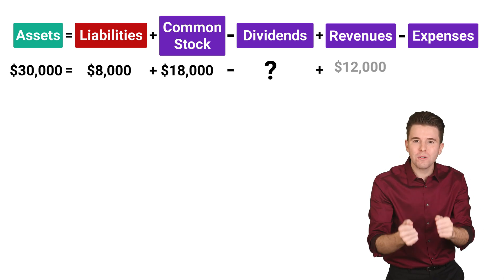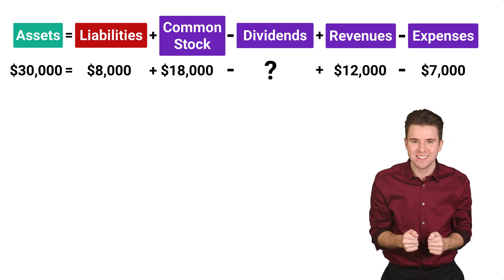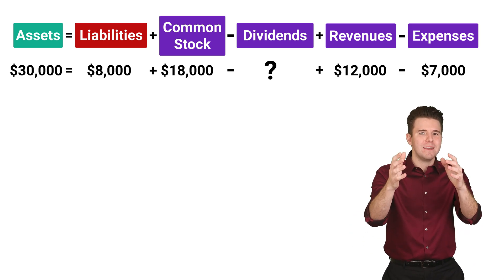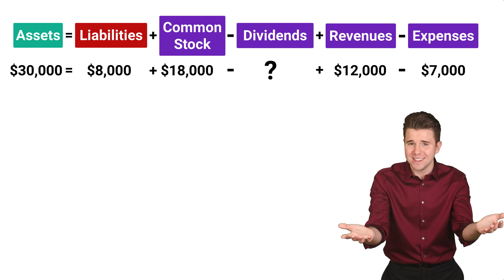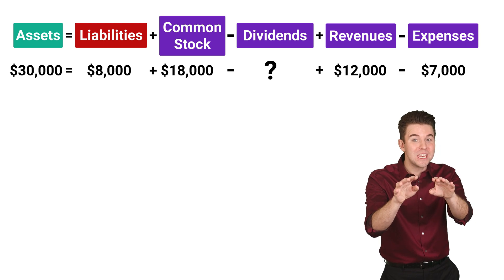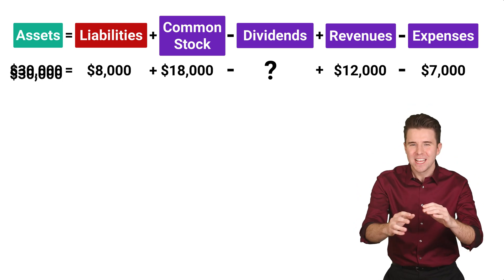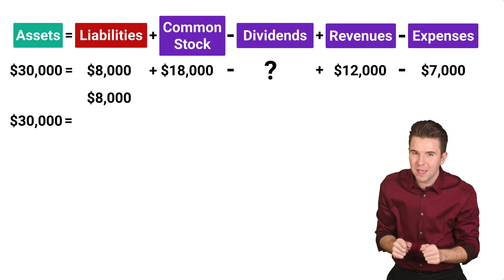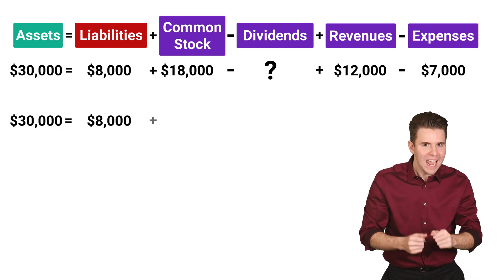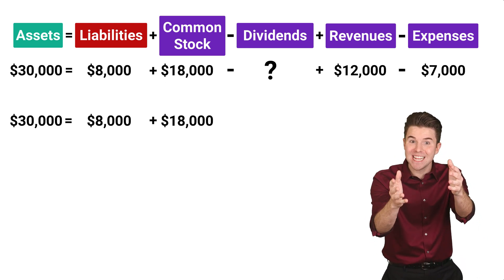revenues of 12,000 and expenses of 7,000. So we take liabilities of 8,000, add common stock of 18,000,